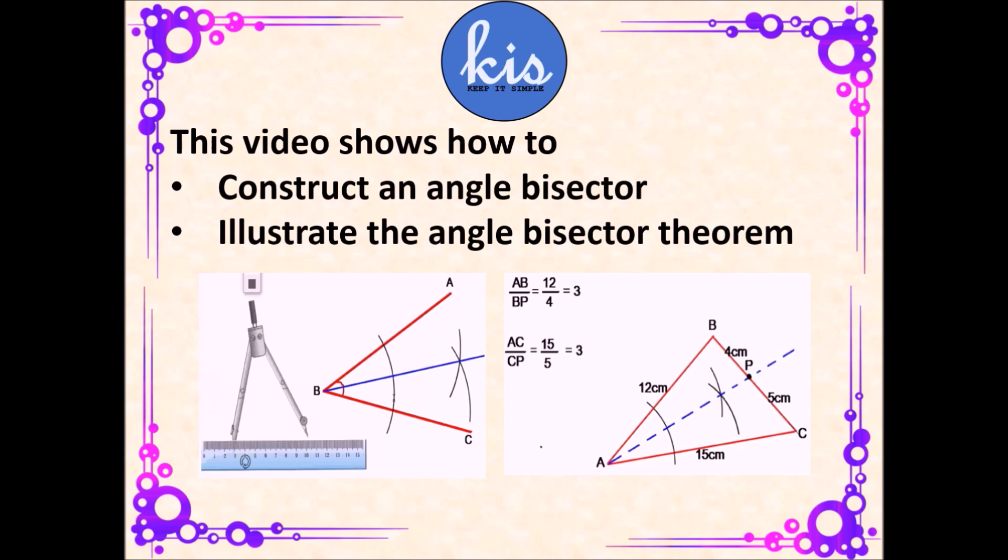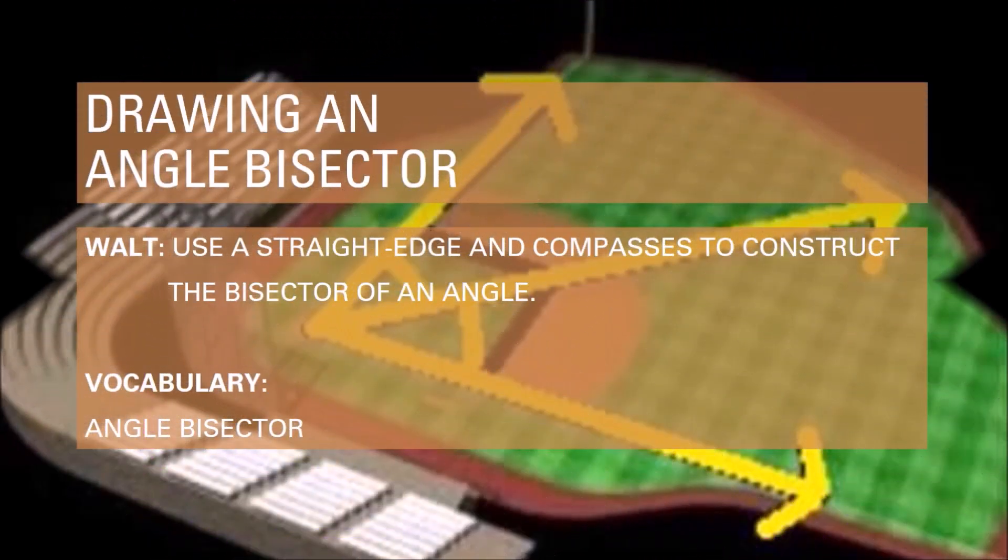Good morning students, welcome to our online lesson for today. In this lesson we will draw an angle bisector using compasses and straight edge. Our vocabulary is composed of two words: angle and bisector. As we all know, angle is a measure of space between two intersecting lines and surfaces.